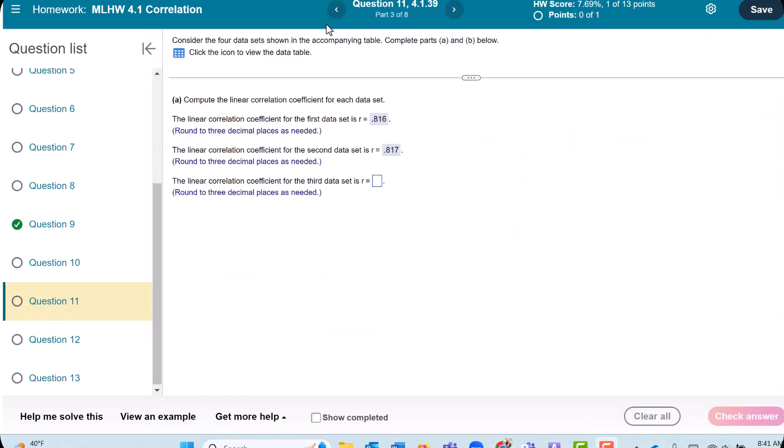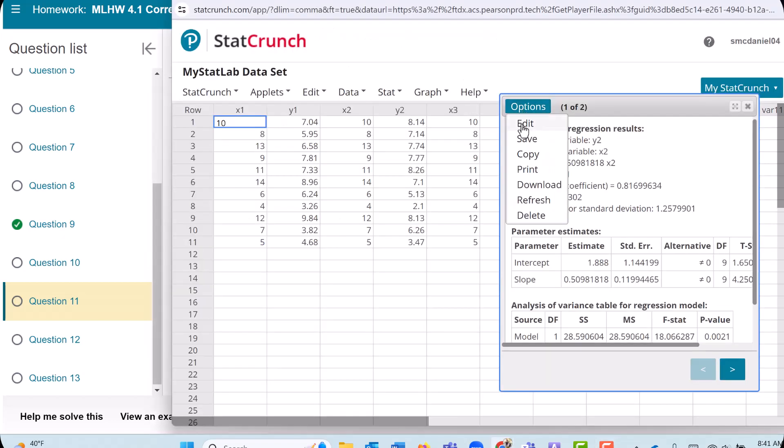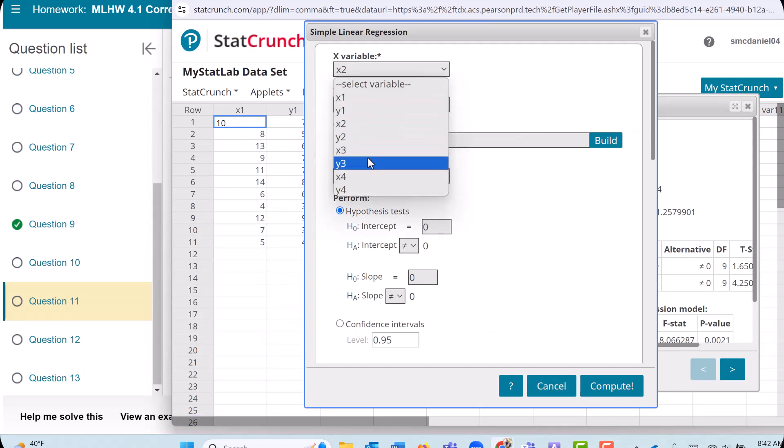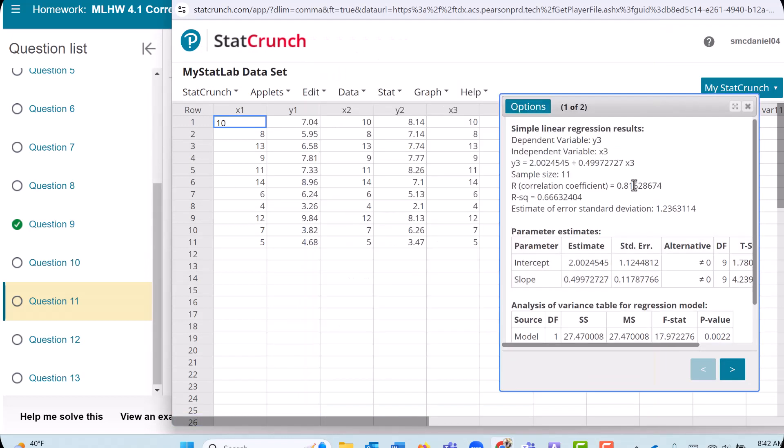Do the same thing for the third data set. I'm going to go to Options and Edit, and do X3 and Y3. We get 0.816.